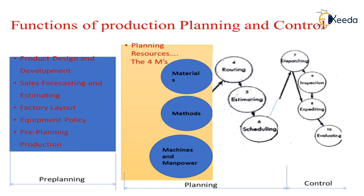Similarly, planning consists of the entire handling of resources such as materials, methods, machines, and manpower — making the raw material flow into a developed product — like routing, estimating, scheduling, dispatching, inspection, expediting, and evaluating, which come under the process of control. When all three processes of pre-planning, planning, and control are properly done, production planning and control will be a success.